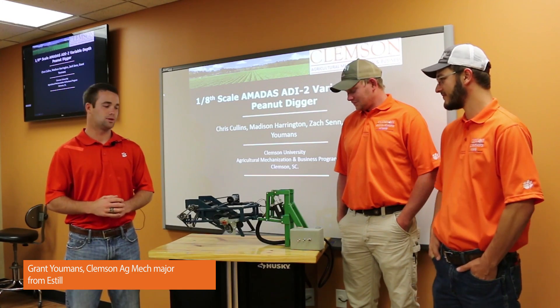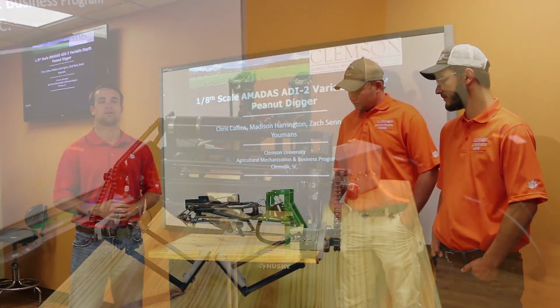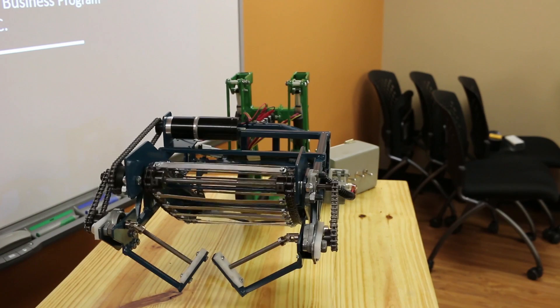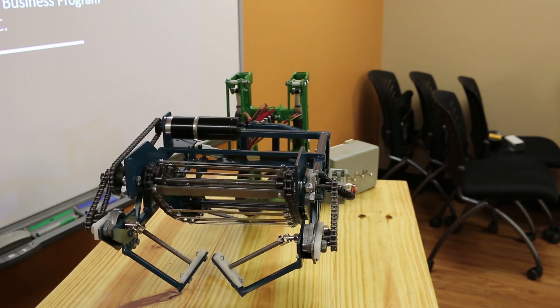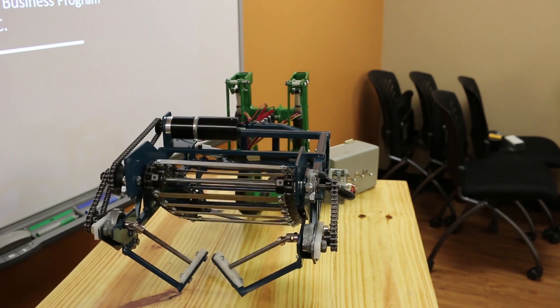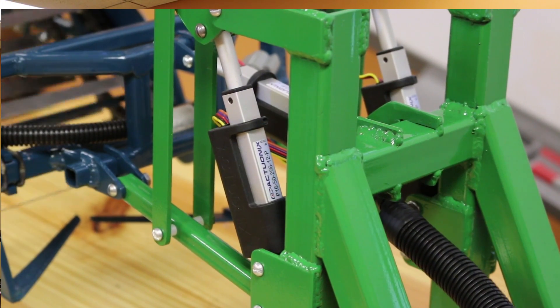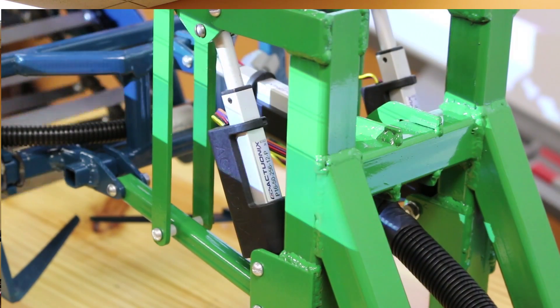So this variable depth technology was produced in order to help farmers reduce digging losses in the field when they're digging peanuts, especially here in the southeast where soil types vary throughout the field. As you're going across the field, you may go from a heavy clay soil to more sandy soil.